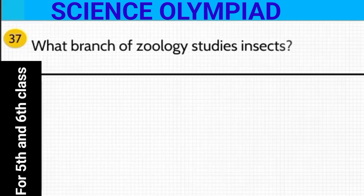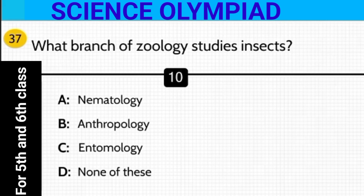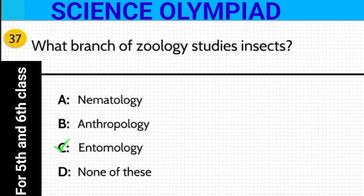What branch of zoology studies insects? Options: nematology, anthropology, entomology, or none of these? The answer is option C — entomology.